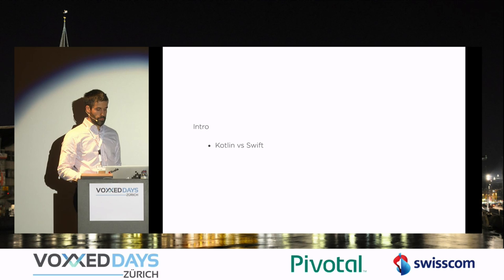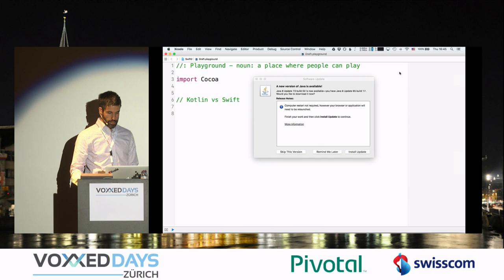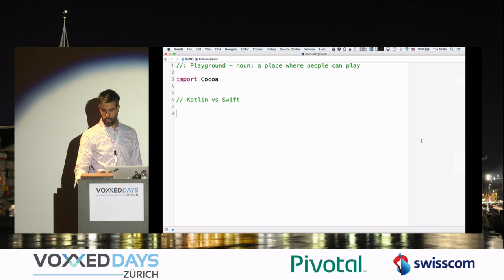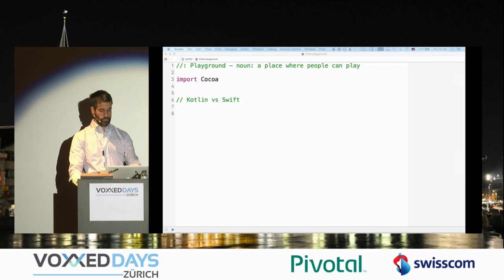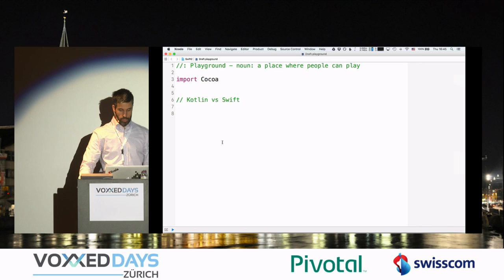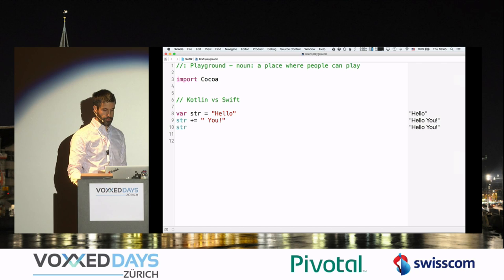Let's start with a quick comparison between Kotlin and Swift. It's really interesting to see that the two languages have lots in common, also with respect to syntax. We definitely see common grounds between Scala, Kotlin and Swift.